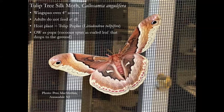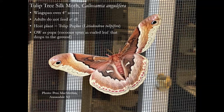Penny McMeekin got a wonderful shot — it's a tulip tree silk moth. We don't usually see them very often. It's a big insect, about four inches across, and like most silk moths the adults don't feed at all. It only has a single host plant: tulip poplar. The cocoons are spun in a curled leaf that drops to the ground — if we clean up too well underneath our tulip poplars, we're not going to have tulip tree silk moths.